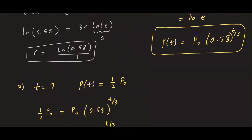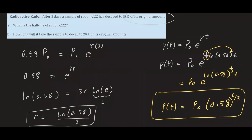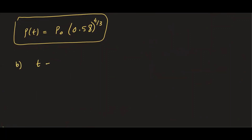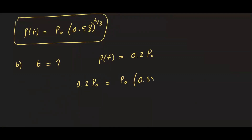For part B, we want to find how long it will take the sample to decay to 20% of its original amount. Using the same model, we set up: 0.2·P₀ = P₀·(0.58)^(T/3). Dividing both sides by P₀ gives 0.20 = (0.58)^(T/3).